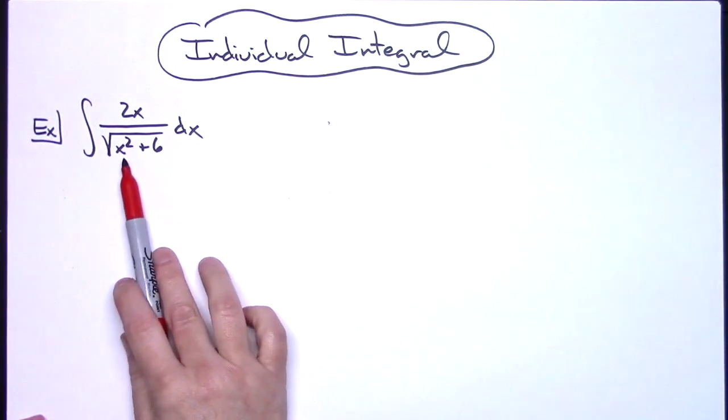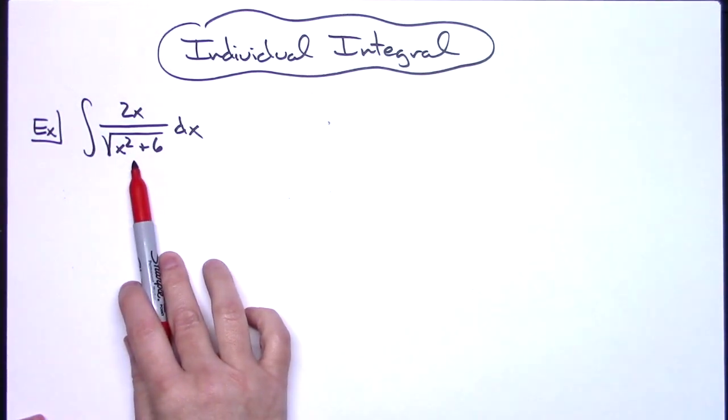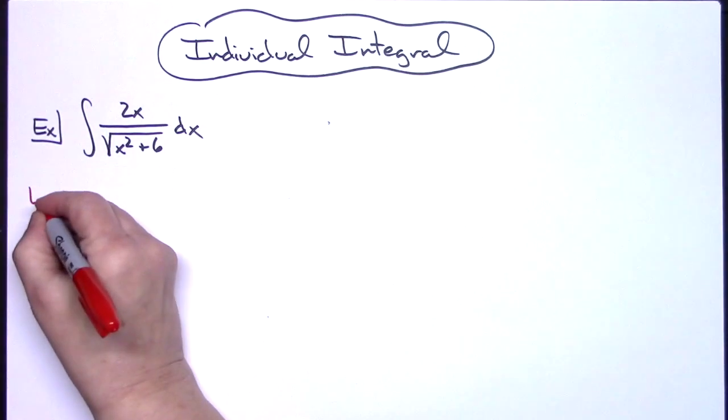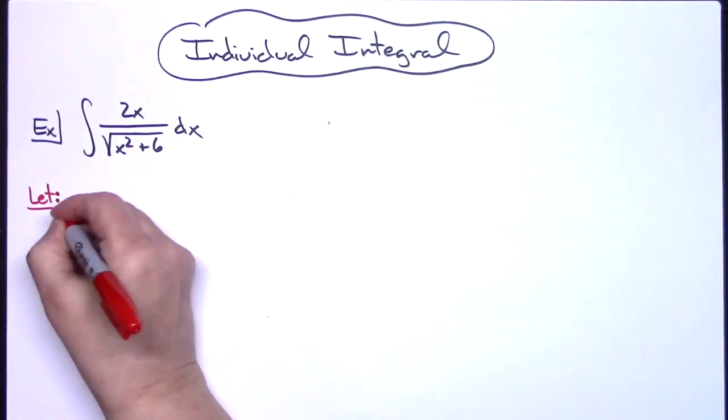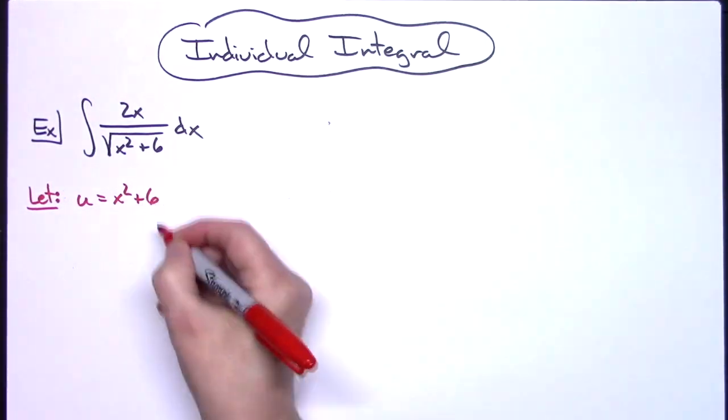If I think ahead a little bit and take the derivative of x squared plus 6, I'm going to get a derivative of 2x, which will cross out nicely with that numerator. So that's where I'm going to start. We're going to let our u be x squared plus 6.